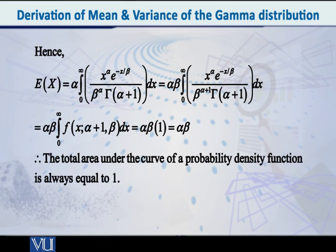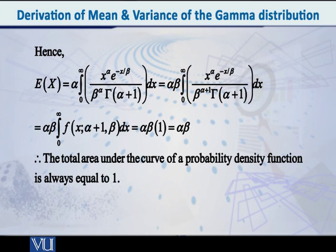Is it actually true, and how can we judge that? It is very interesting, and that's why I asked you to concentrate. The expression currently inside the integral is the PDF of a Gamma distribution whose shape parameter is alpha plus 1 and whose scale parameter is beta. Let's verify: in the general Gamma PDF formula we have x raised to alpha minus 1. If we replace alpha with alpha plus 1, we get x raised to alpha plus 1 minus 1, which is x raised to alpha.